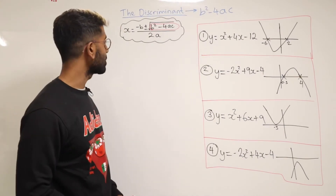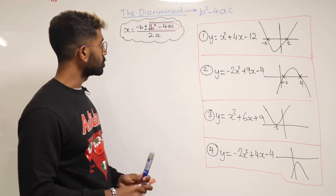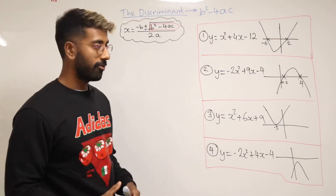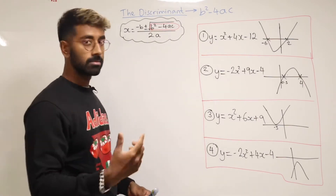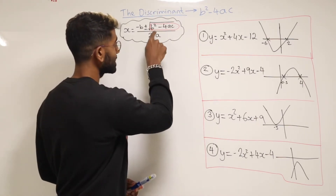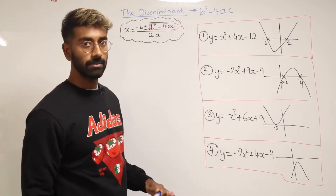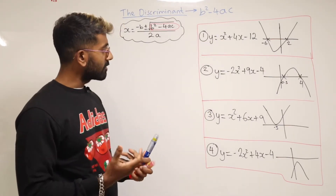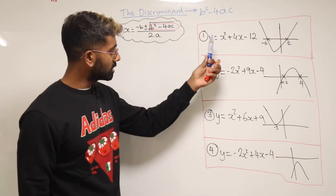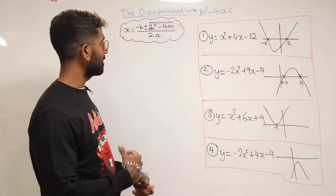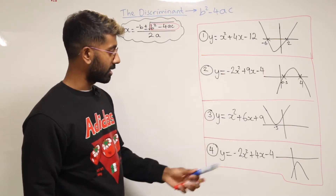Welcome back to the channel. We've got a video on the discriminant. You would have actually seen the discriminant before — it's just part of the quadratic formula, more specifically the part that's in the square root: b squared minus 4ac. The discriminant gives us some important information. We're going to look at these four quadratics and see what the discriminant tells us about their graphs.